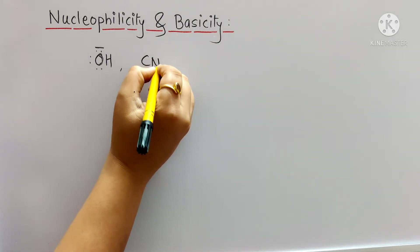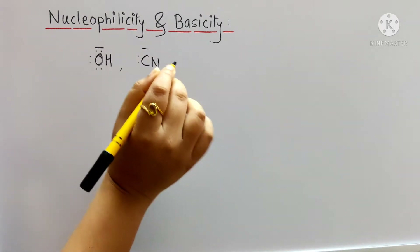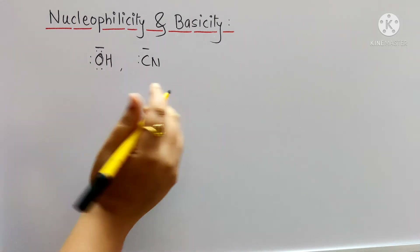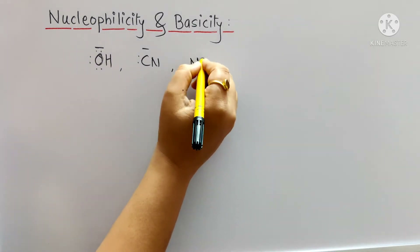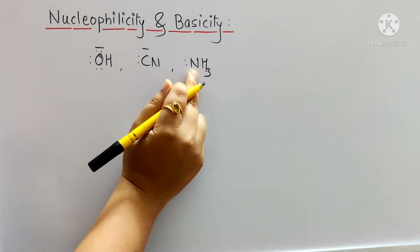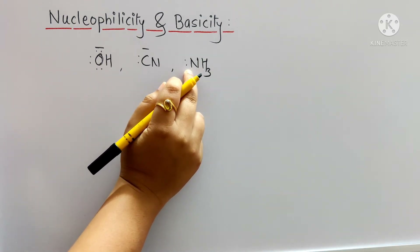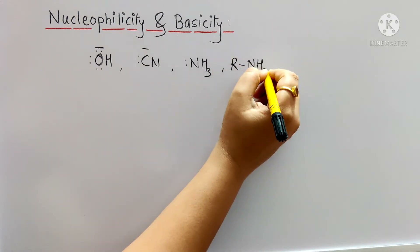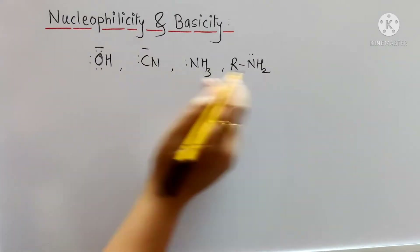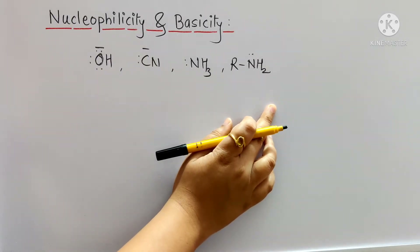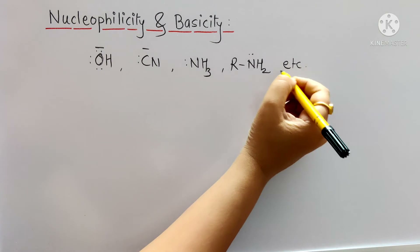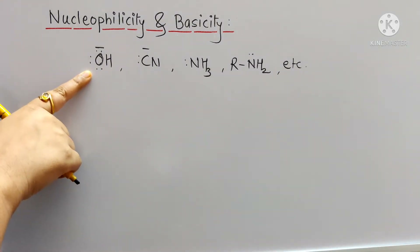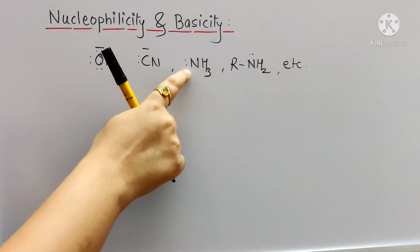Let us take another example. Suppose say cyanide ion — in this case also, the unshared electron pair is present. Ammonia: the nitrogen unshared electron pair is present. R-NH₂, primary amines — all these are the examples of nucleophiles, and these nucleophiles are having unshared electron pairs.